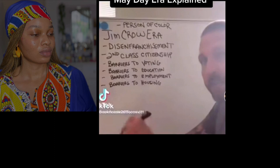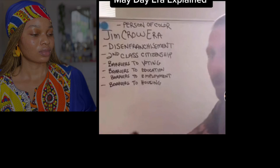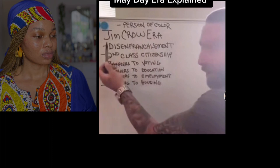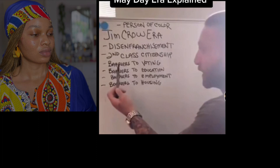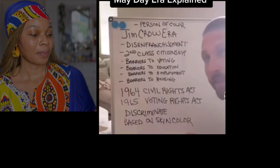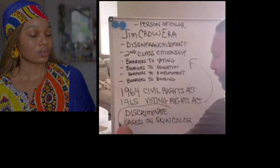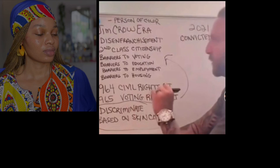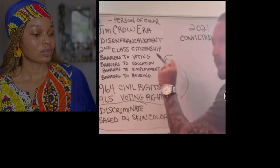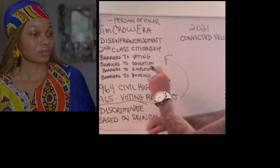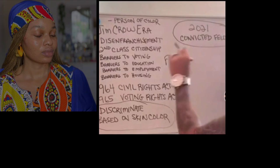A person of color in the United States during the Jim Crow era faced disenfranchisement, second-class citizenship, barriers to voting, barriers to education, barriers to employment, and barriers to housing. Then we passed the 1964 Civil Rights Act and the 1965 Voting Rights Act, saying we can no longer discriminate based on skin color. So in 2021, what is the only label we can legally discriminate against? Convicted felons are the only people we are legally allowed to disenfranchise.